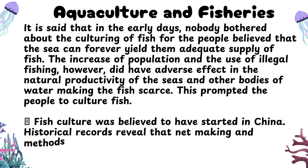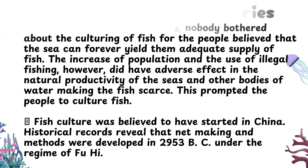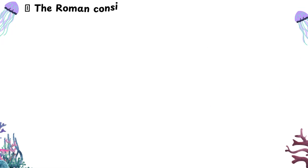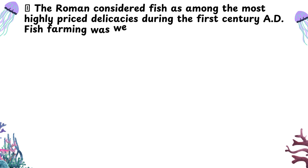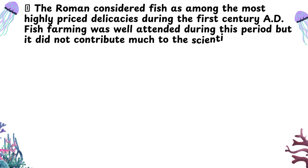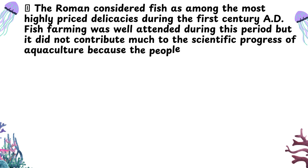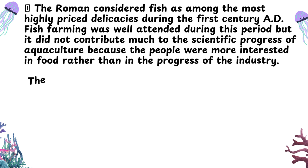Fish culture was believed to have started in China. Historical records reveal that net making and methods were developed in 2953 B.C. under the regime of Fuhai. The Romans considered fish among the most highly priced delicacies during the first century AD. Fish farming was well attended during this period, but it did not contribute much to the scientific progress of aquaculture, because the people were more interested in food rather than in the progress of the industry.